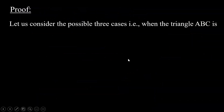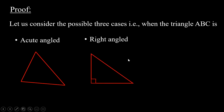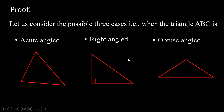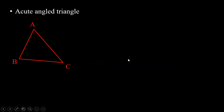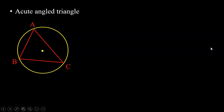There are three possibilities for the proof: the triangle can be an acute angle triangle, a right angle triangle, or an obtuse angle triangle. We will prove the sine rule in each of these cases. Let us first look at the acute angle triangle. We have an acute angle triangle ABC, and we draw its circumcircle with center S — we usually denote the circumcenter with capital letter S.